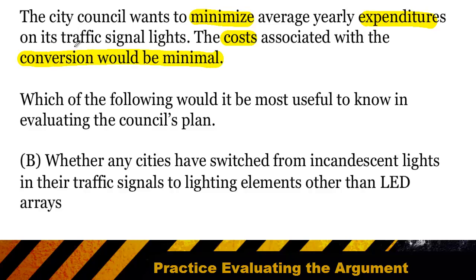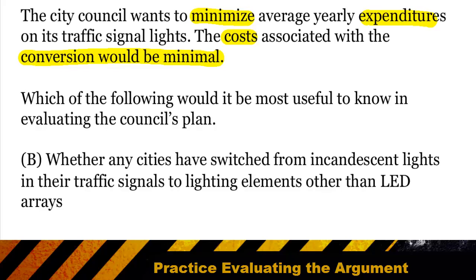Now let's check to see if each answer choice would be relevant to achieving the plan's objective. Answer choice B asks us whether we need to know if any other city has switched to materials other than LEDs. We imagine a situation where another city used LEDs and a situation where other cities used something different than LED. In either case we know nothing about the costs that these cities incurred, so it gives us zero information about whether we will minimize our costs. So answer choice B is irrelevant.